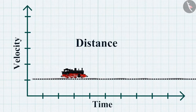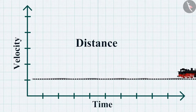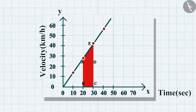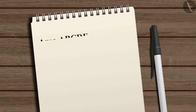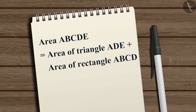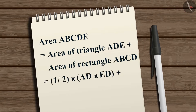We can also calculate the distance covered by the train from the velocity-time graph. To calculate the distance travelled by the train in a certain time interval, we have to calculate the area of ABCDE under the velocity-time graph. Area ABCDE equals area of triangle ADE plus area of rectangle ABCD, which equals one-half multiplied by AD multiplied by ED, plus AB multiplied by BC.